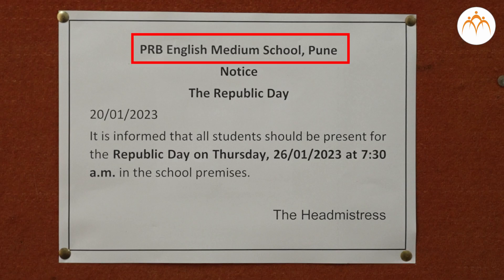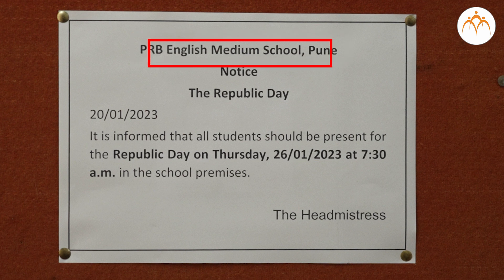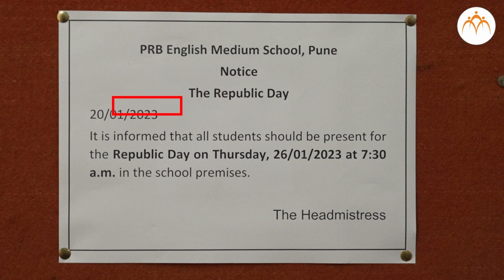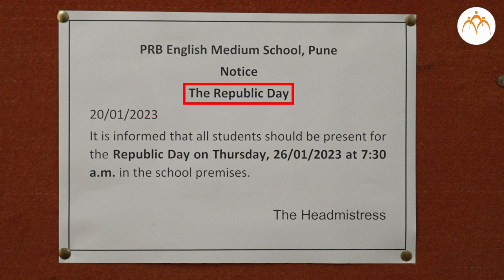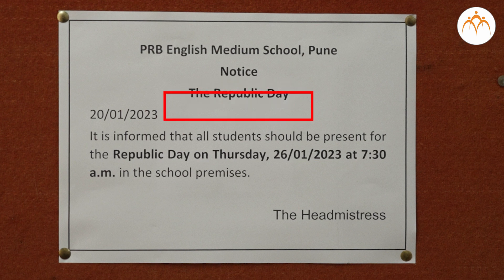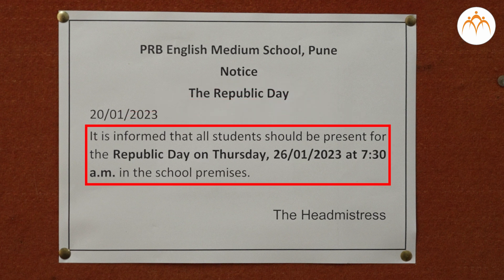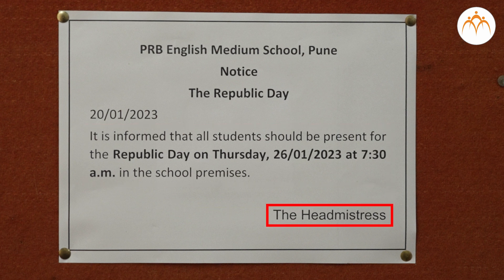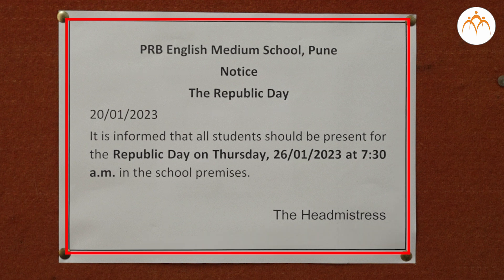Now let's understand the format of the notices given above and see what we have understood from them. The name and place of the school, organization or office issuing the notice should be written at the top. The word 'Notice' is written in the middle on the next line. The date is written on the next line to the left corner. A suitable title is chosen for the message of the notice. The notice is written in simple and clear words. Signature, name and designation of the person issuing the notice is written on the next line. Most importantly, the notice is written in a box.